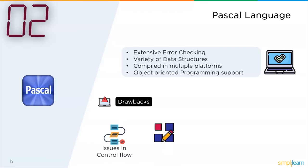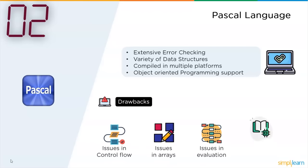The major issues with Pascal were: first, issues in control flow — when writing a complex program, the compiler could end up decoding the code in a different manner than intended. It also had some issues with data structures like arrays, issues in expression evaluation, and lastly a lack of good library support.